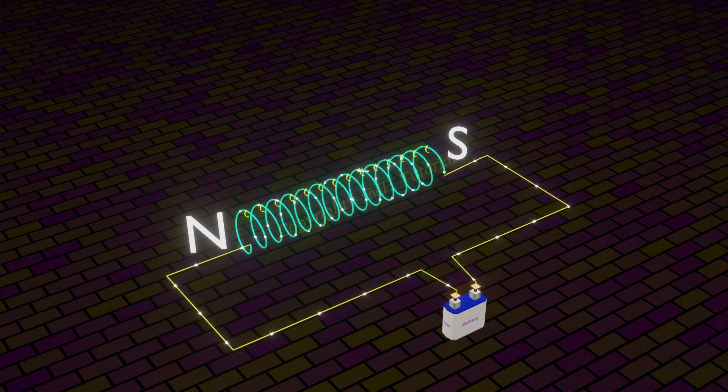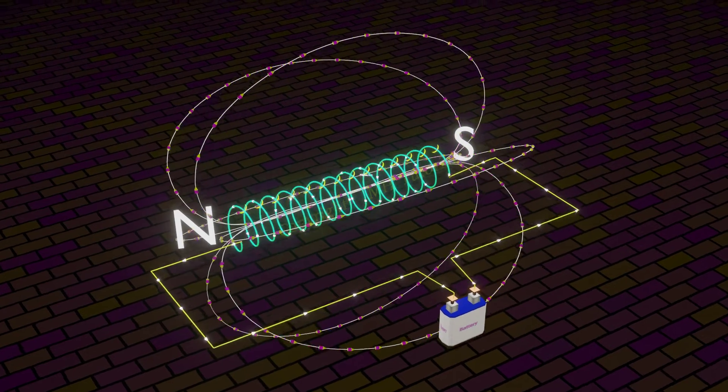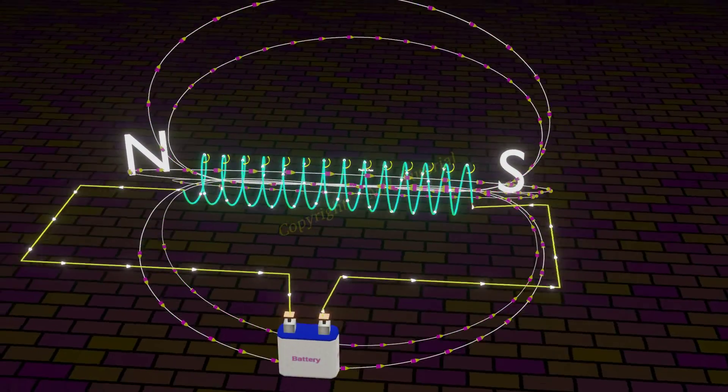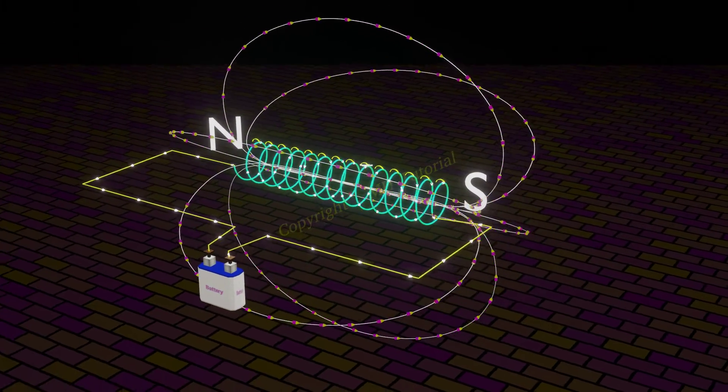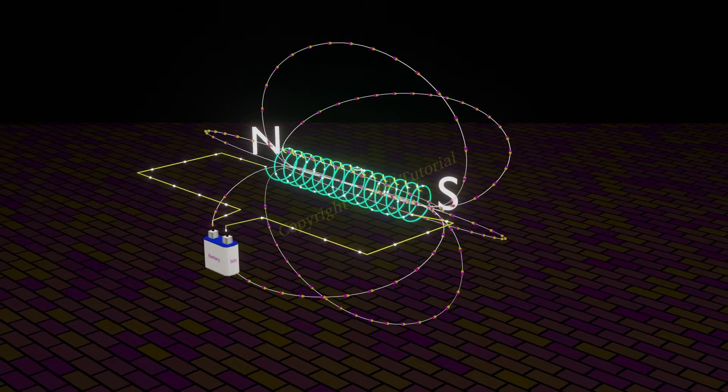And side of clockwise current is its south pole. Note that, if you alter the direction of current, the magnetic pole also changes its end.